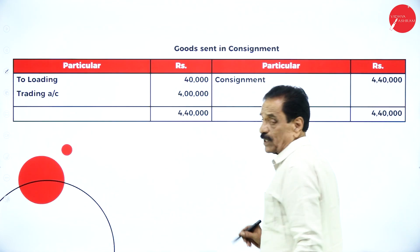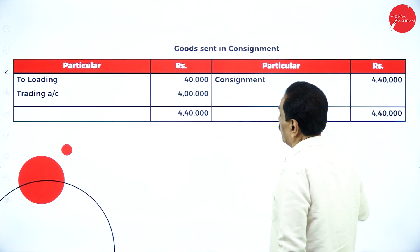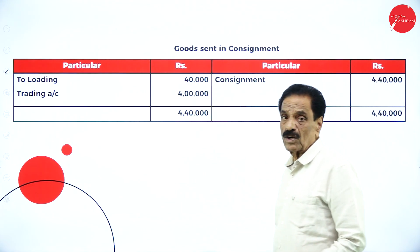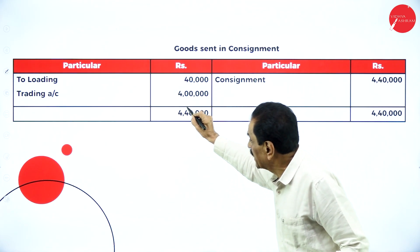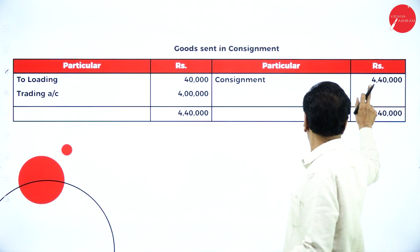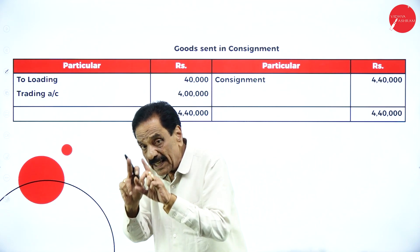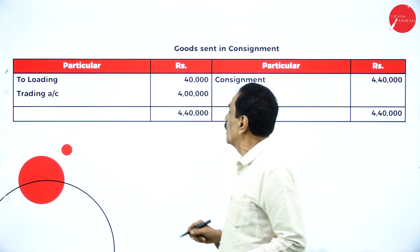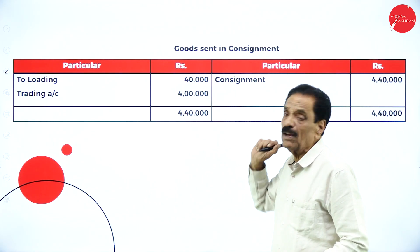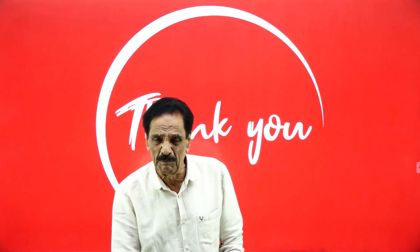For the goods sent on consignment account: goods sent by consignment are Rs. 4,40,000. Of that, Rs. 40,000 is the loading or extra amount shown. So the real trading account value is only Rs. 4,00,000. This is the loading — the extra amount — which is Rs. 40,000, and what actually goes for trading is Rs. 4,00,000.